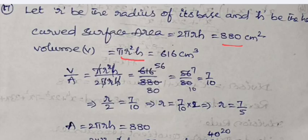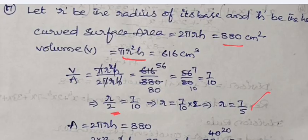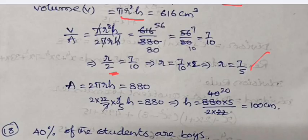Let r be the radius of its base and h be the height of the cylinder. Curved surface area of the cylinder is 2πrh which equals 880, and volume is πr²h which is 616. Dividing volume by area, we get r/2 = 7/10, then r = 7/5 centimeters. When r = 7/5, substituting the value of r in curved surface area which is 880, we get h = 100 centimeters.